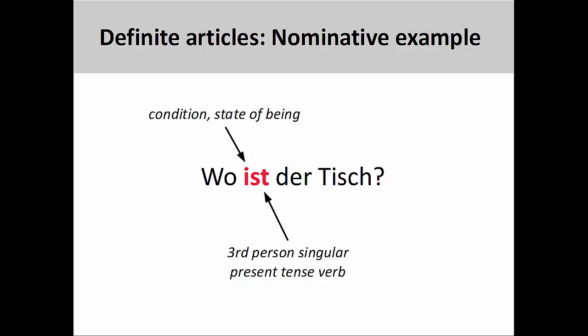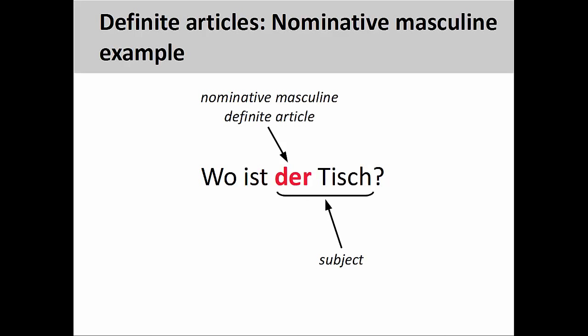In the sentence you see on the screen, Wo ist der Tisch? — Where is the table? — the third person singular verb ist shows no action; it simply reports a condition or state of being. Since no real action is described, the masculine definite article Der indicates that the noun Tisch is in the nominative case and therefore the subject of the sentence.